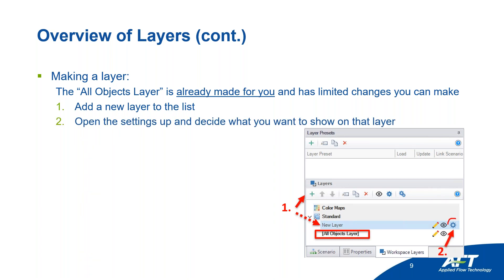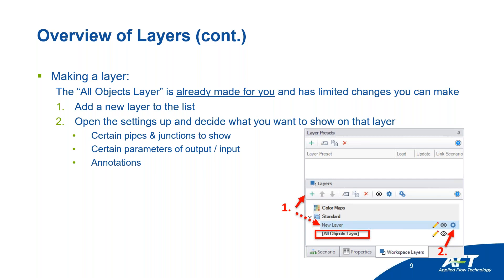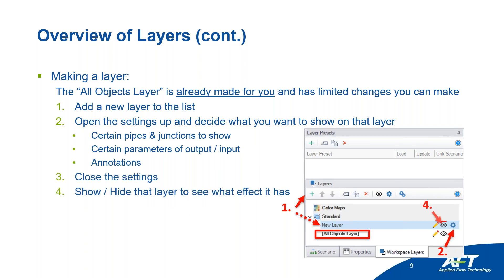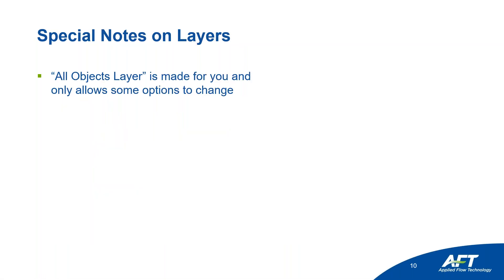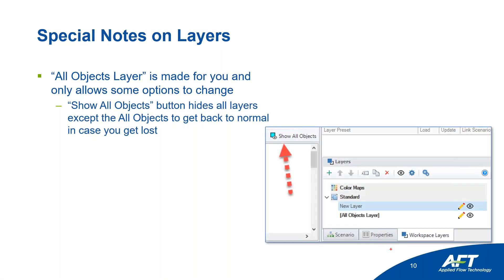Then open the settings with the gear icon — that's where you define your pipes and junctions to show, the parameters of output or input, and any annotations like text boxes to show on that layer. Then close the settings and show or hide the layer to see what effect it has — part of playing with it is seeing what happened when you did something.